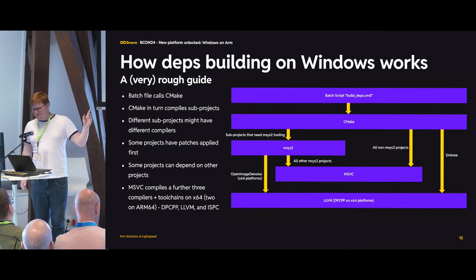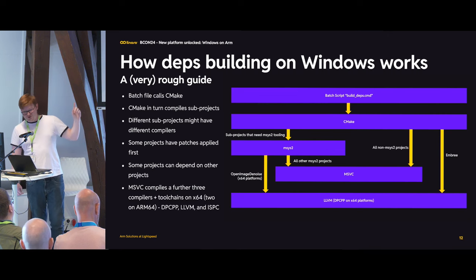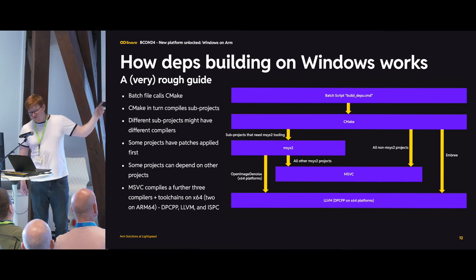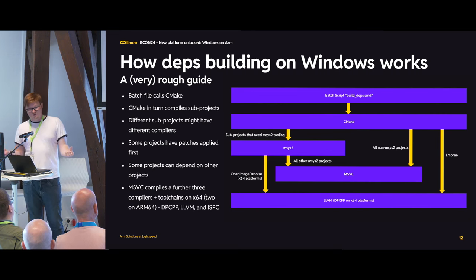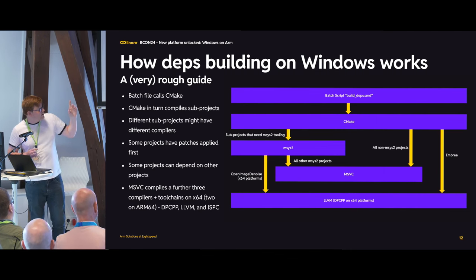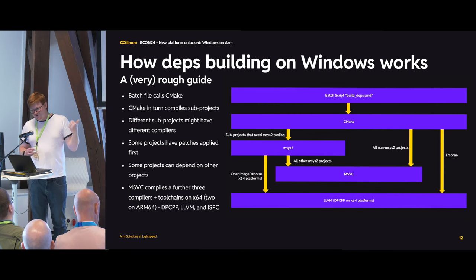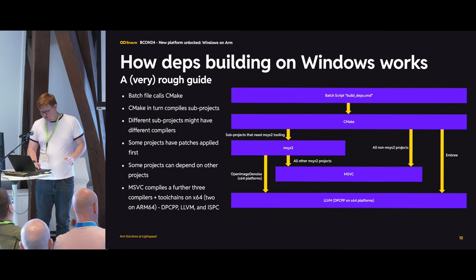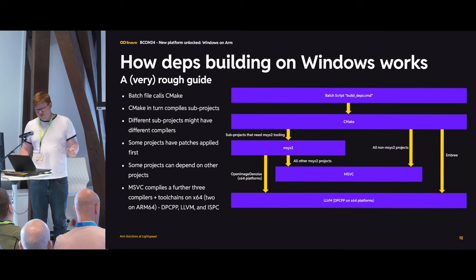There's a batch script that calls CMake, which calls projects underneath it — sometimes built with a different compiler depending on platform and architecture — with patches applied on top. Projects sometimes depend on other projects and different versions of LLVM. Then MSVC compiles three further compilers: SYCL, a full copy of vanilla LLVM, and ISPC. MSVC — the Microsoft compiler from Visual Studio 2022 — is native on ARM64, and Visual Studio itself is fully native.